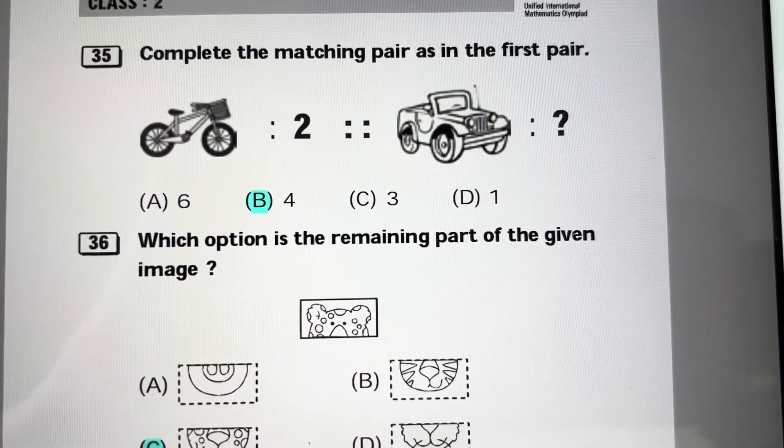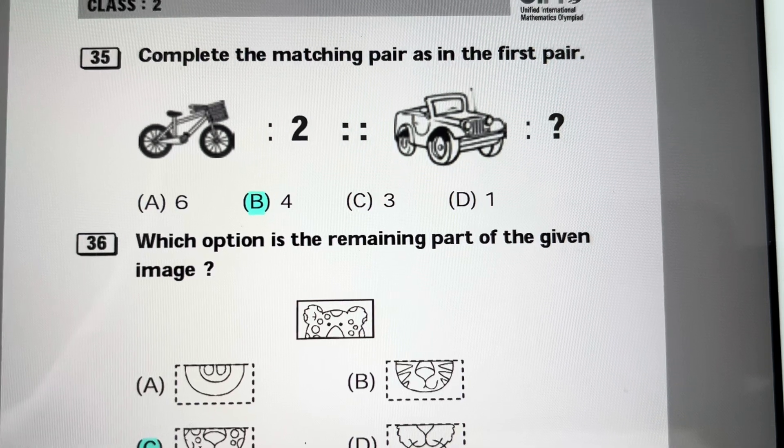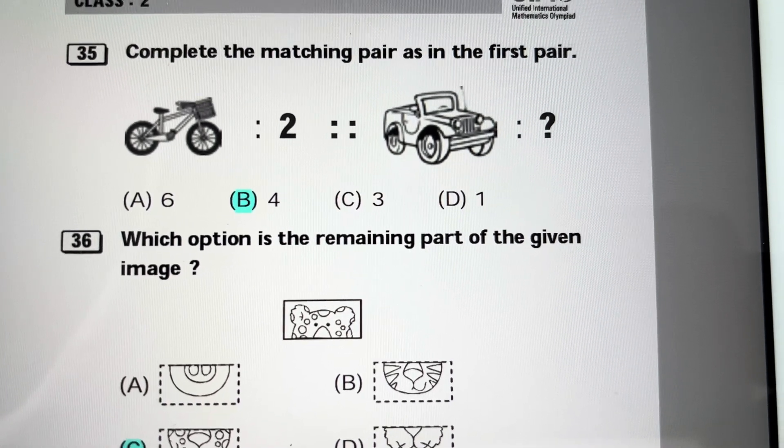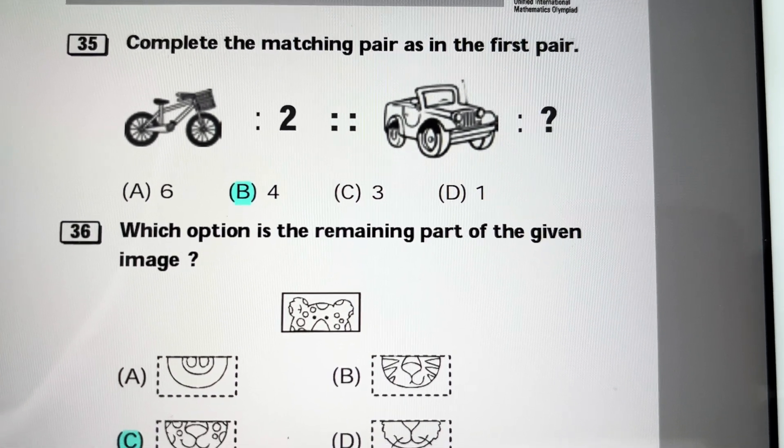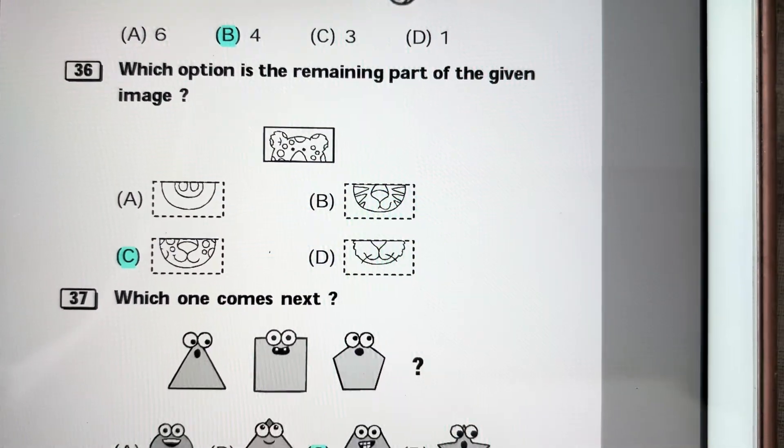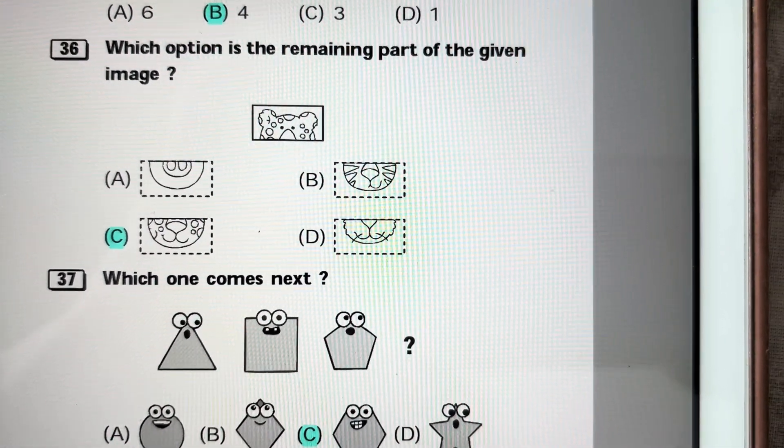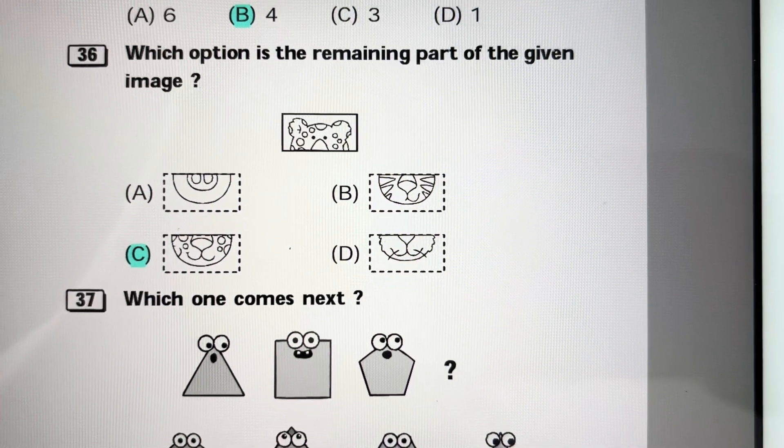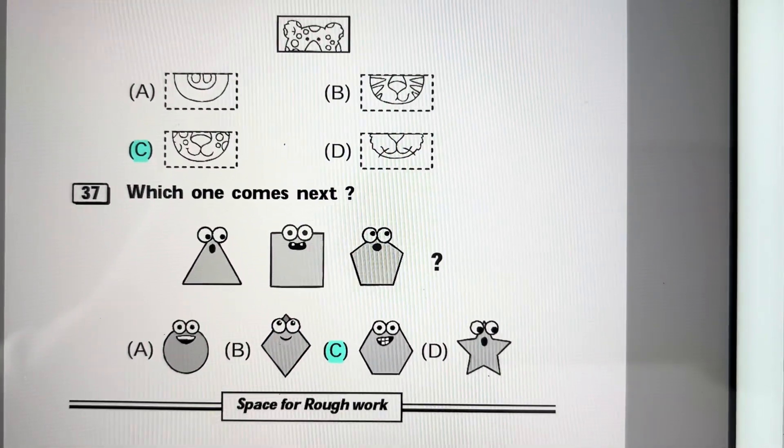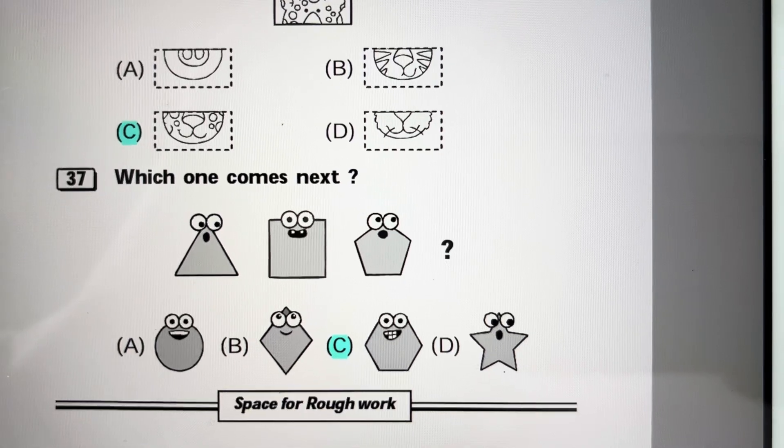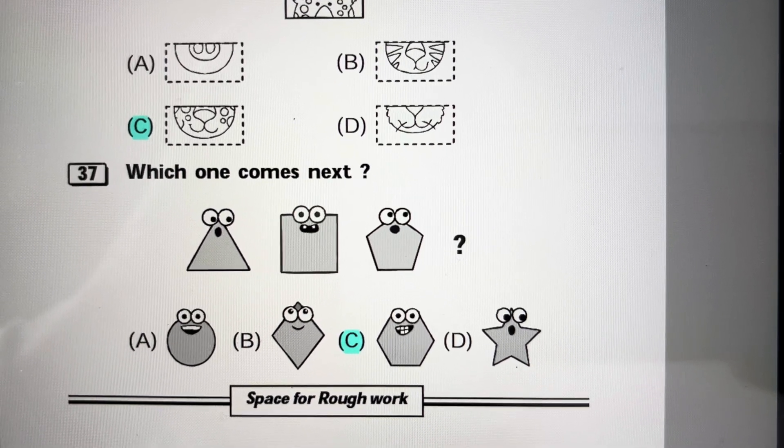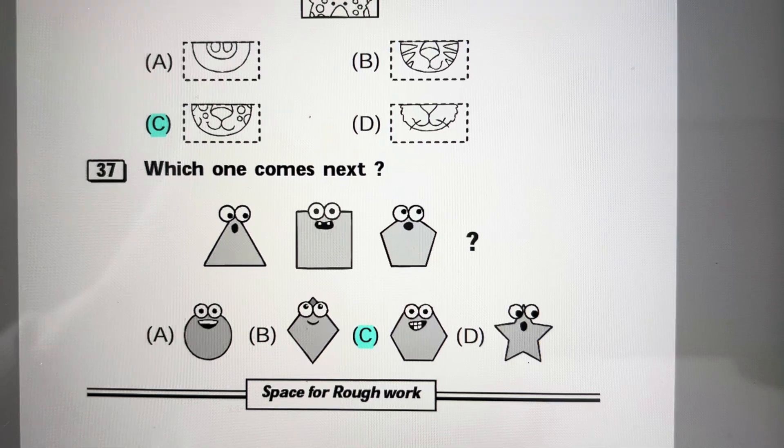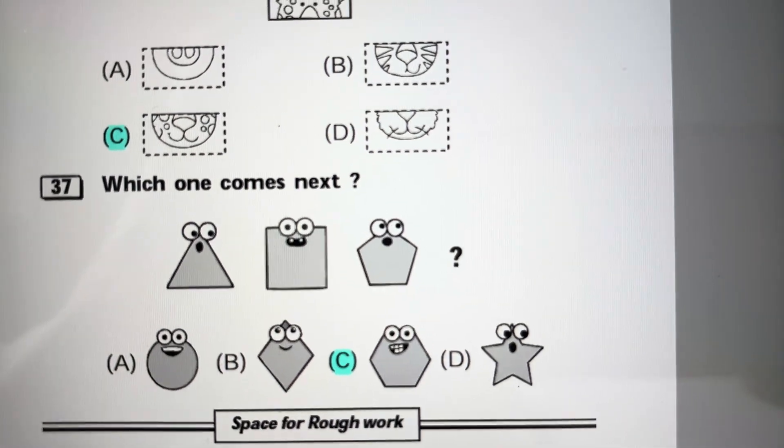Complete the matching pair as in the first pair. Cycle has two wheels, so car has four wheels. Answer is B, 4. Which option is the remaining part of the given image? C. Which one comes next? First there is a triangle, then a square, then a pentagon, so there should be a hexagon. Answer is C.